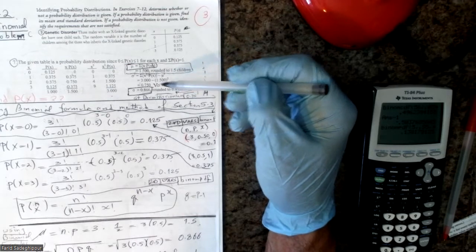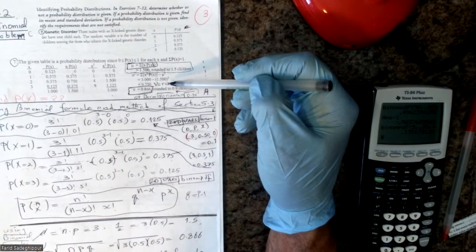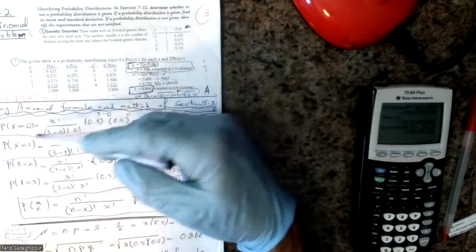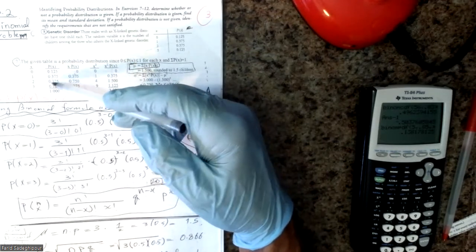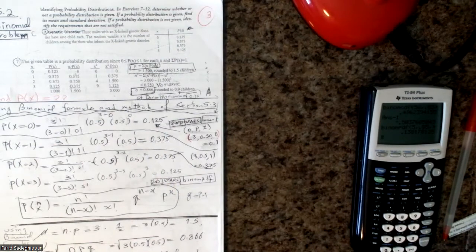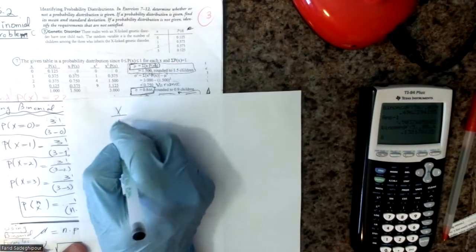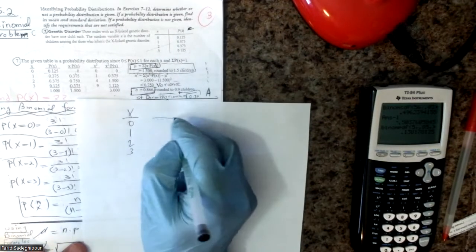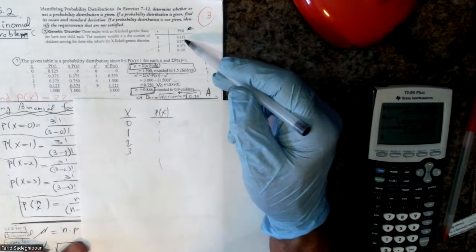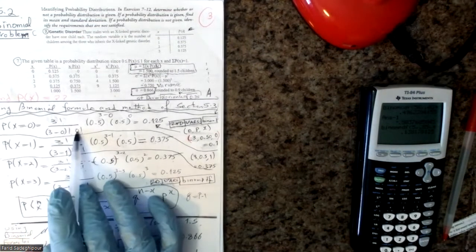What we can do is use the binomial formula to calculate p(x). So if we give you the value of x and ask you to calculate p(x), we don't have to give p(x) directly. If we ask you to calculate the values 0.125, 0.375, and 0.375, you can use the binomial formula.